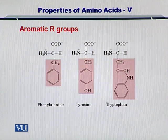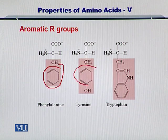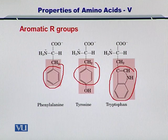The other type of amino acids are the aromatic R groups. These aromatic R groups take their name from the aromatic groups attached, and therefore they are large and are different in behavior as compared to the aliphatic groups.